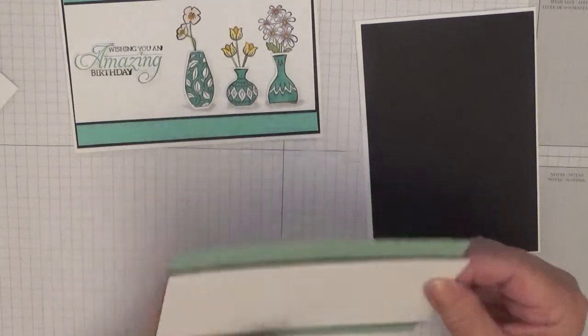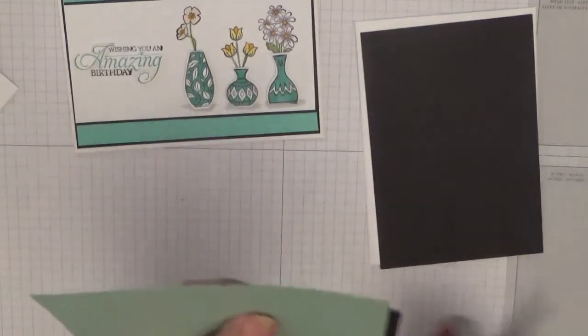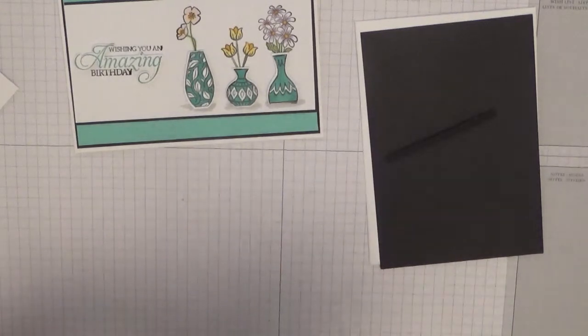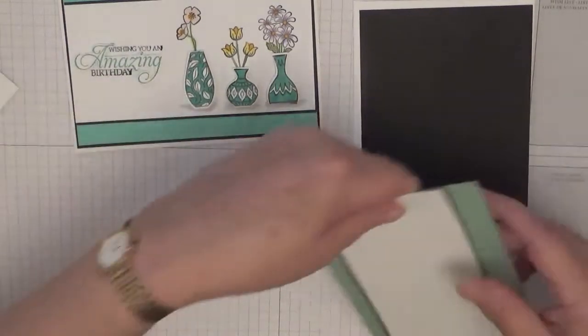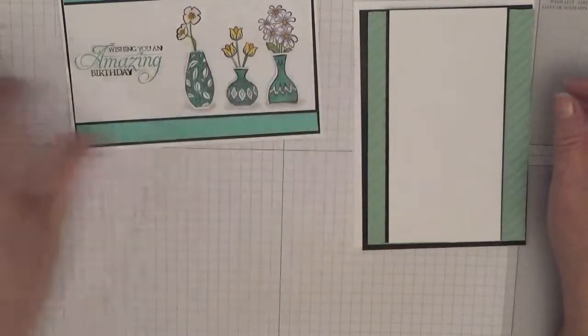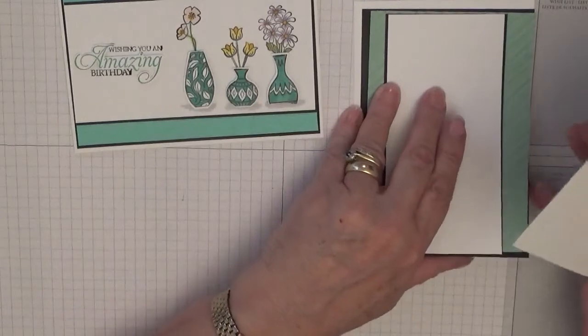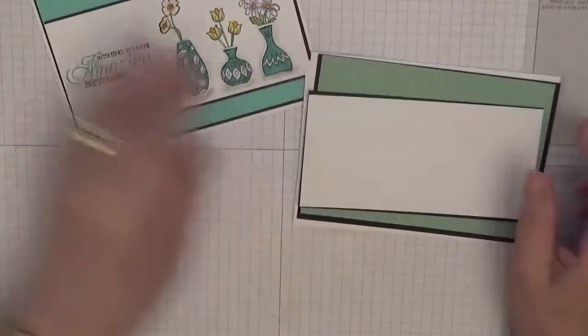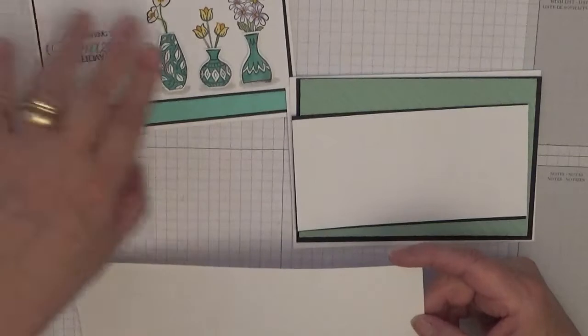I'll trim them down when I know I need to trim them down now, so I know where to put my vase. That's for the inside. That's five and five eighths by three and seven eighths for the inside. And you'll need a scrap of white for the sentiment and the vases.